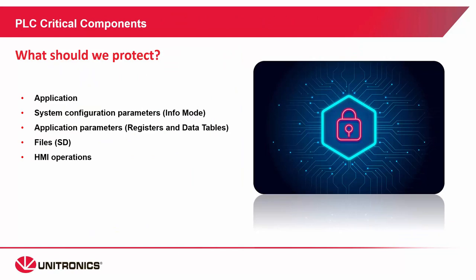Moving on to what users should protect — what are the critical PLC components? First, the application: we want to protect it from being deleted, damaged, or overwritten. System configuration parameters — things like IP addresses, port settings, Modbus configuration, serial parameters, and more should be protected. Application parameters, things like set points and boundaries. Any generated files from the PLC. Any HMI operations, web server operations, or remote access will also be important to consider.